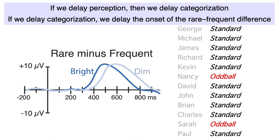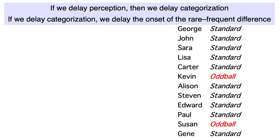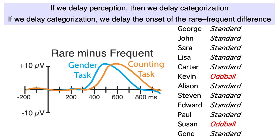We'd also expect to see about a 50 millisecond slowing of response times. If we slow perception, then we slow categorization, and if we slow categorization, we slow the response. Alternatively, we could try to slow categorization directly. Imagine that the task was to count the letters in each name and press one of two buttons to indicate whether it was an odd number or an even number. If we make odd numbers rare and even numbers frequent, we could make a rare minus frequent difference wave. It would take you longer to count the letters in Nancy than to determine whether Nancy is a male or female name, and that would increase the time needed for the brain to determine whether a given name fell into the rare or frequent category, delaying the rare minus frequent ERP difference.